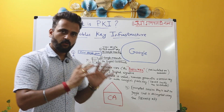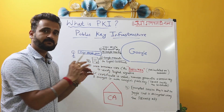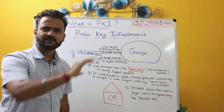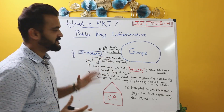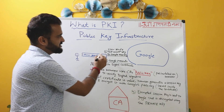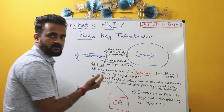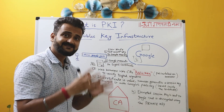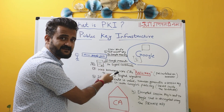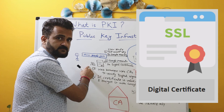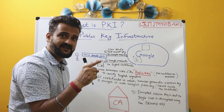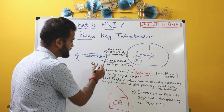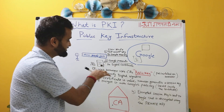Now let's start with the flow. The use case is a user typing www.google.com on the browser. We are not covering the DNS aspect — we are focusing on the PKI aspect. Once you type it, a TCP connection request will be sent to the Google web server. In the second step, Google presents its digital certificate — the SSL/TLS certificate — back to the browser. This particular digital certificate has been digitally signed by the certificate authority using its private key.